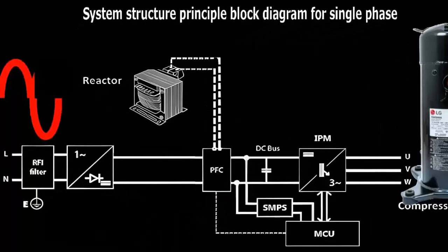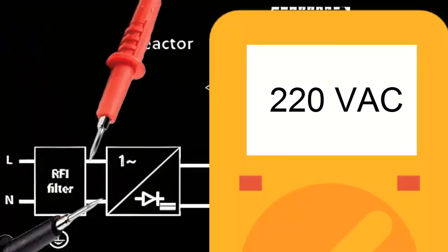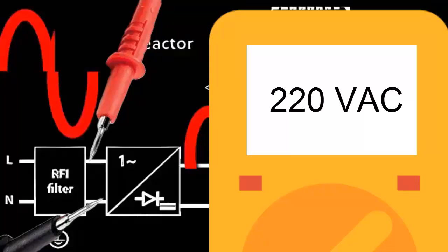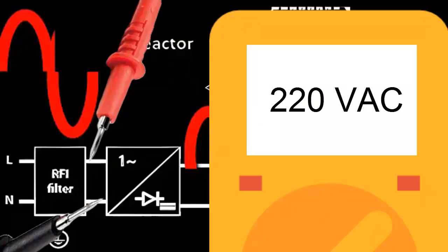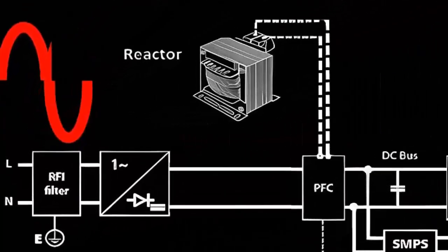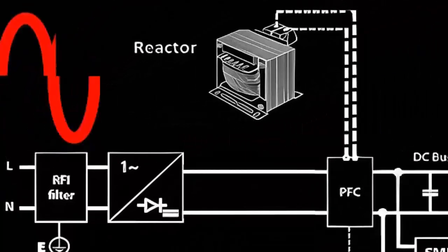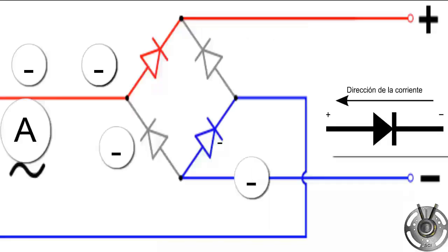Alternating current, which flows in two directions, comes from the external power grid with a voltage of 220 volts. However, the electronic board operates with direct current, which flows in only one direction. For this reason, a rectifier bridge is required, which reorganizes the passage of current using rectifier diodes.